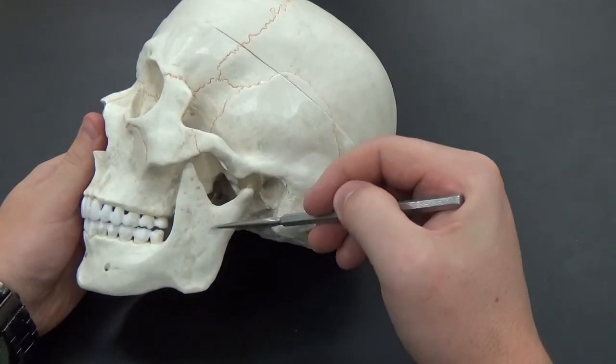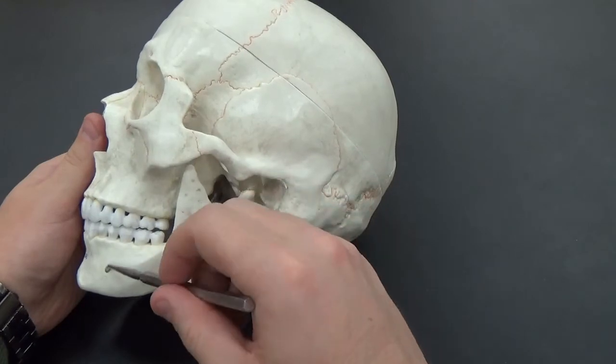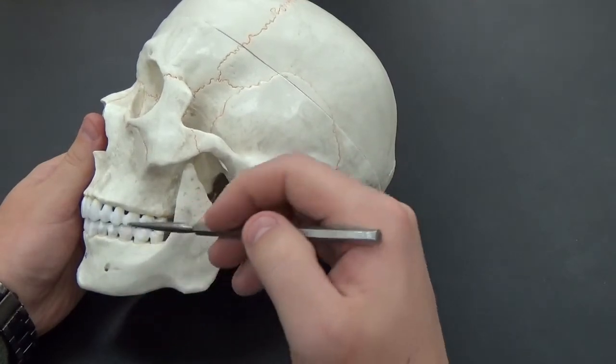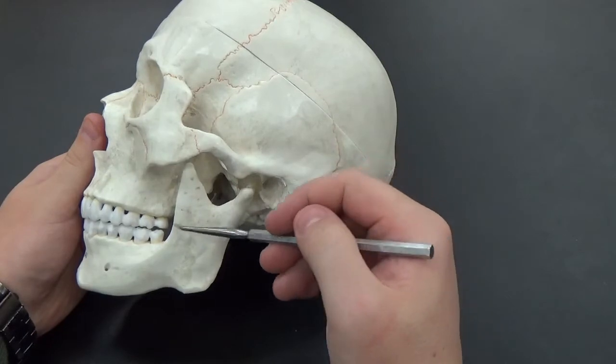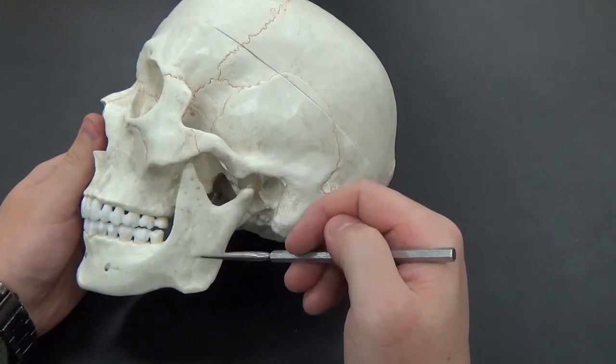So along our mandible, the mandible again, you can see that mental foramen right up there in the front, you can see the ramus, which is this whole region right here.